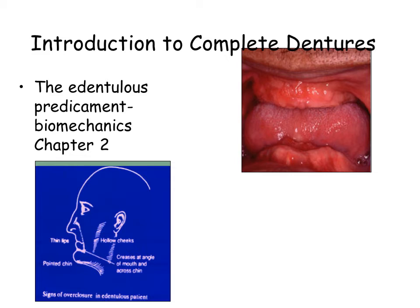The complete denture is supported by mucosa and residual bone, unlike teeth with a periodontal ligament. The edentulous state represents a compromise in the integrity of the masticatory system, accompanied by adverse functional and aesthetic sequelae. Maximal bite force is five to six times less in the denture patient, which may lead to decreased masticatory efficiency.